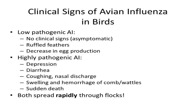When birds are infected with a highly pathogenic avian influenza, their clinical signs are more severe. Birds may experience depression, diarrhea, coughing, or nasal discharge. It is also possible that there may be swelling and hemorrhage of the wattles or comb, which is when there is an accumulation of fluid and blood under the skin.